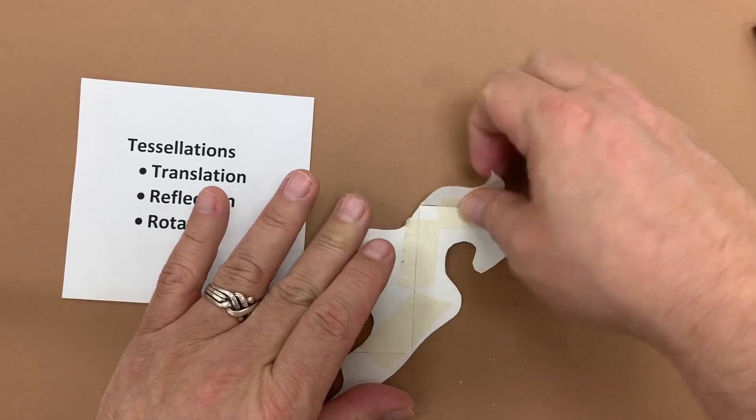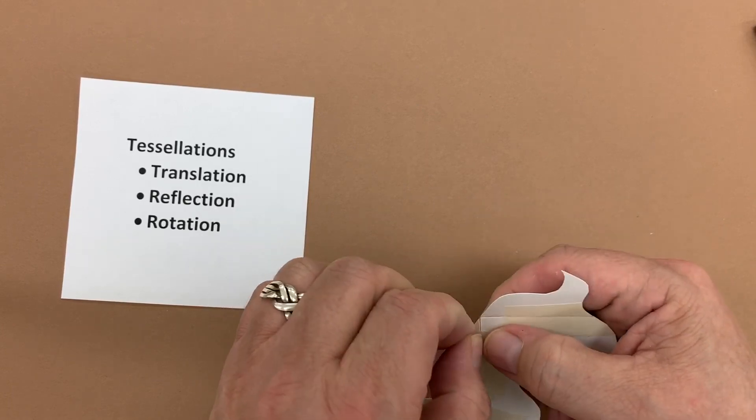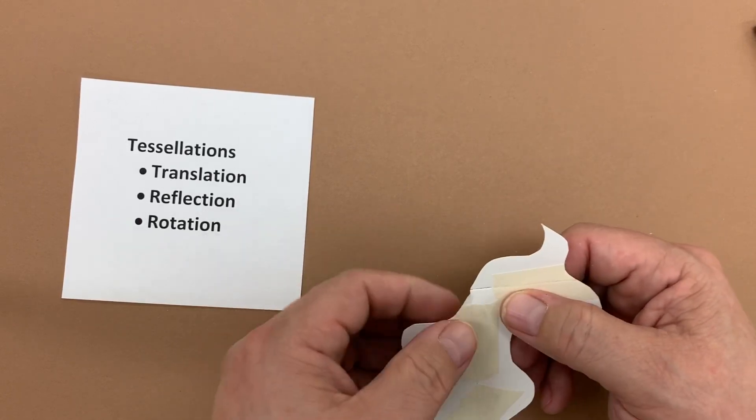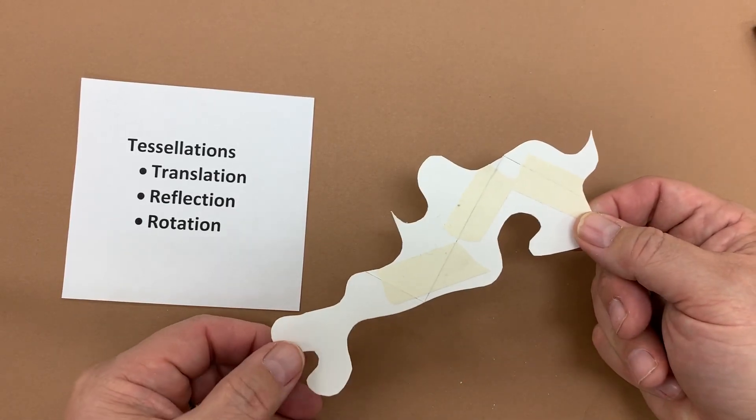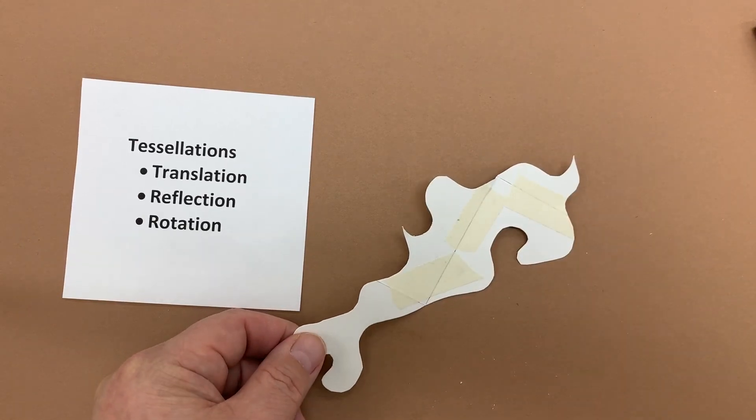If I have any tape that sticks over the edge, you want to make sure that you fold that over or rip it off or cut it off. And now I have a tessellation piece.